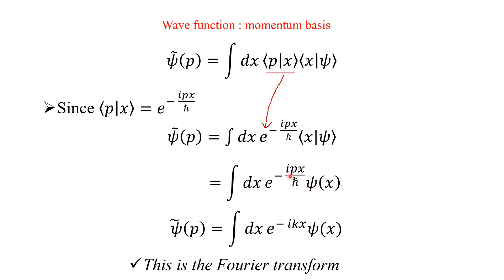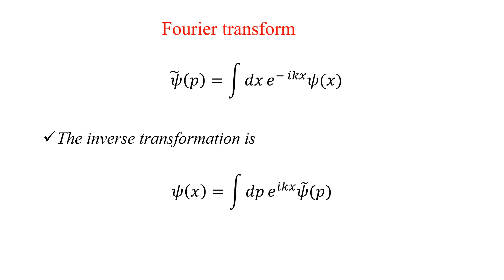Using p/ℏ = k, so that p = ℏk and the ℏ cancels, we obtain ψ̃(p) = ∫ dx e^(−ikx) ψ(x). This is the well-known Fourier transformation — you are transforming from position space (x) to momentum space (p). So the momentum-space wave function is the Fourier transform of the position-space wave function.